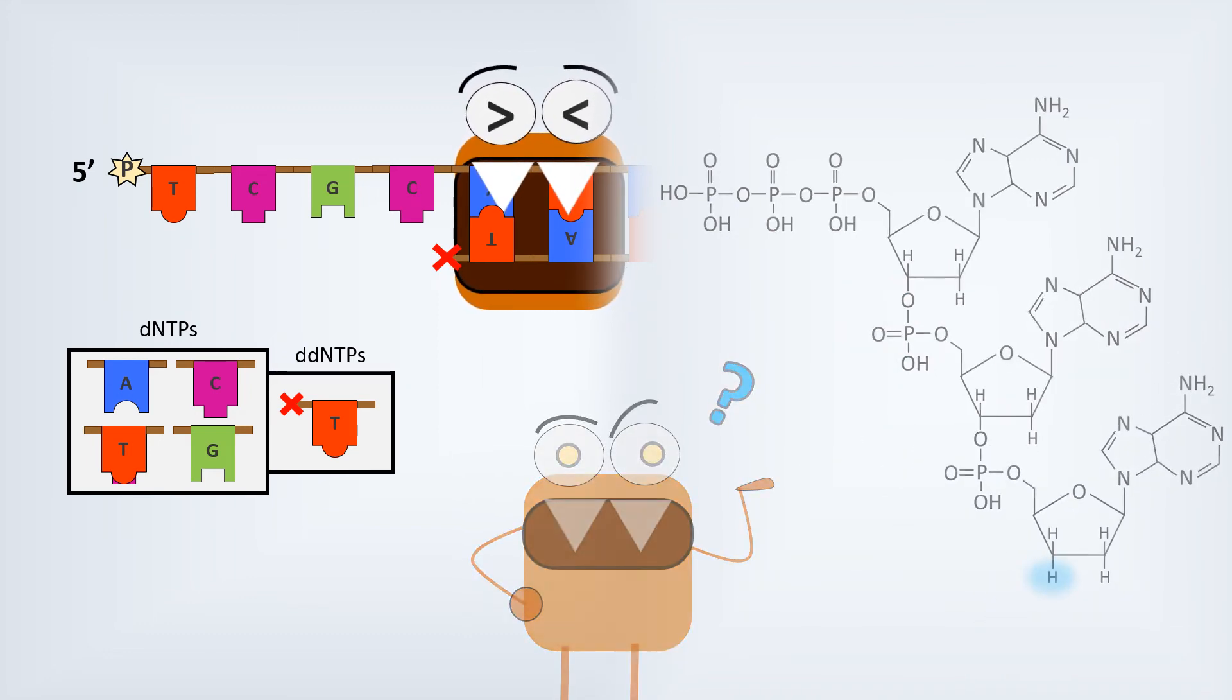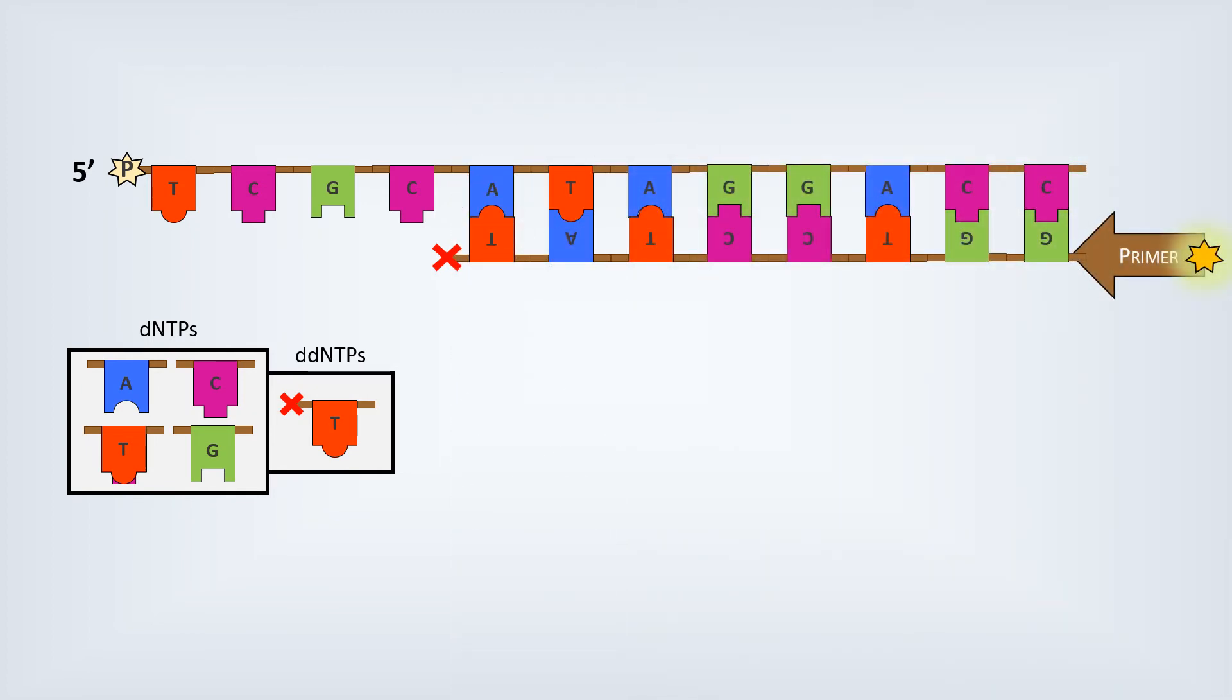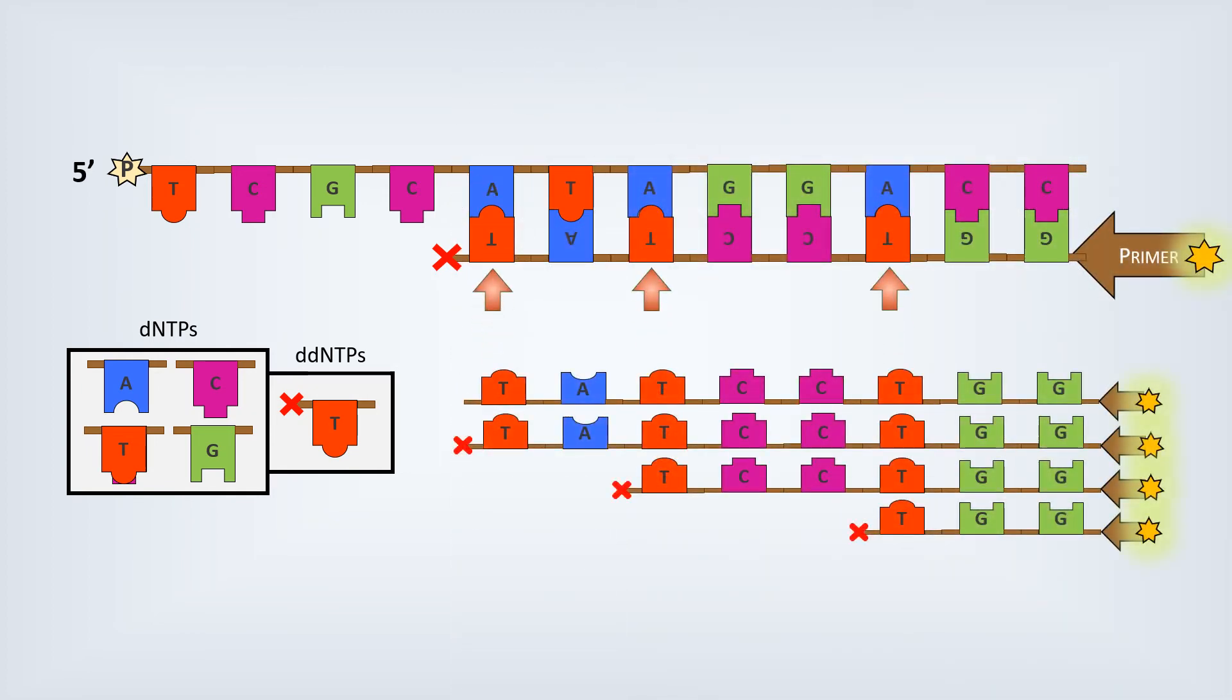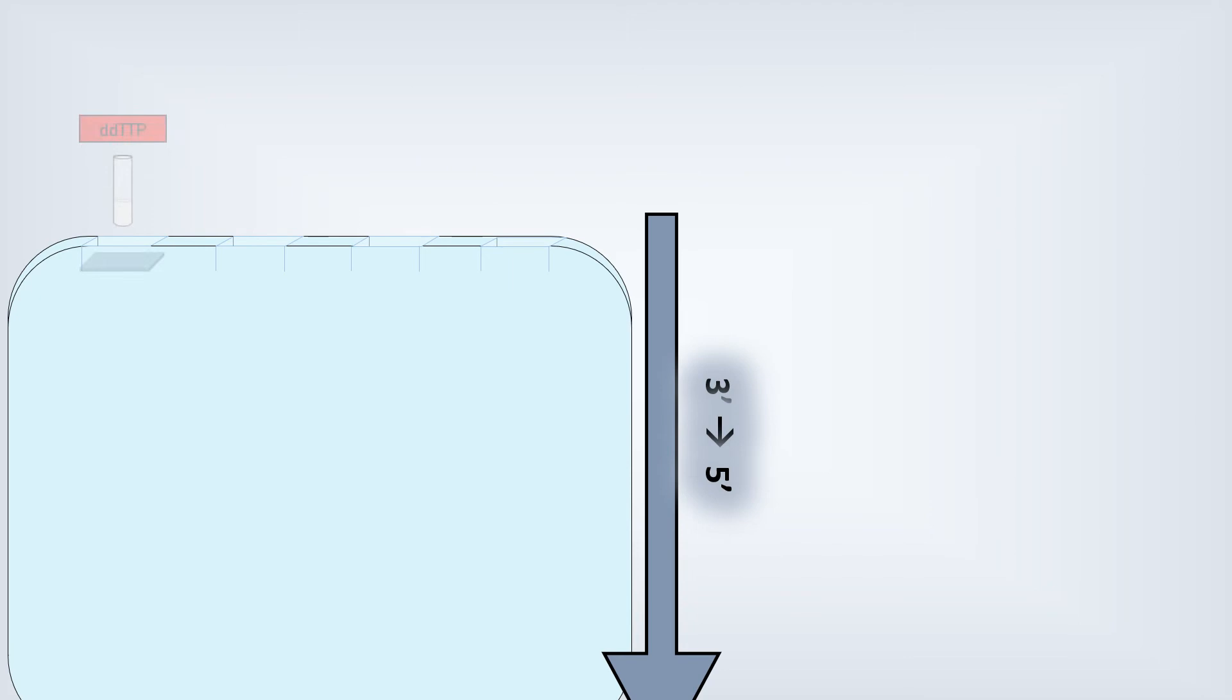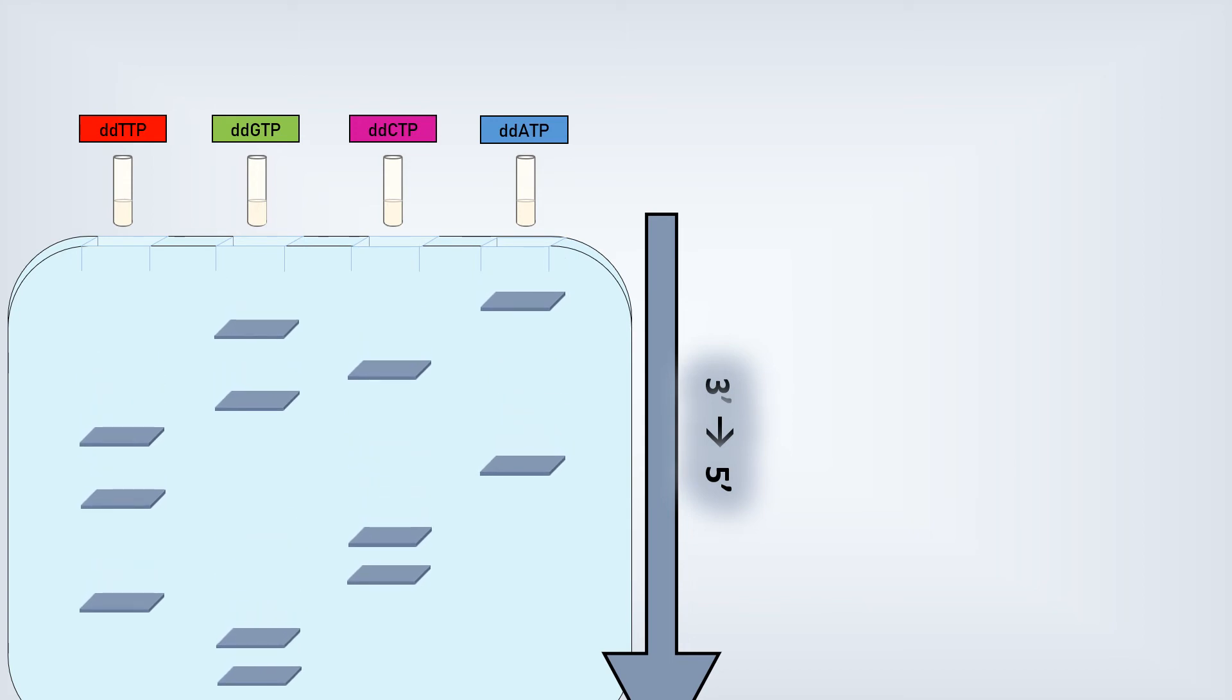However, the dideoxynucleotide addition can randomly occur at any of the corresponding positions, generating different length fragments. If we do this process using different dideoxynucleotides in different fractions, we can then separate them in an agarose gel, making the shortest fragments move farther in it, and easily identifying the sequence of the complementary strand that has been synthesized.